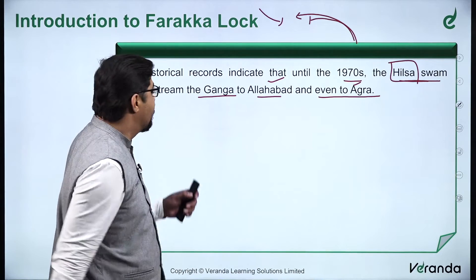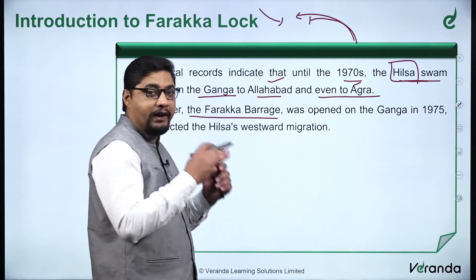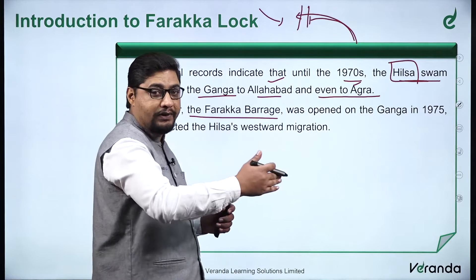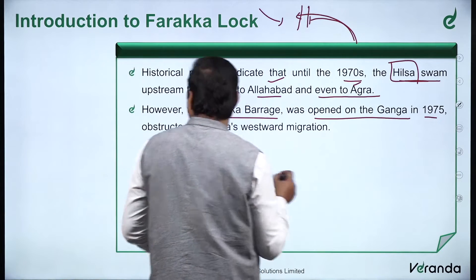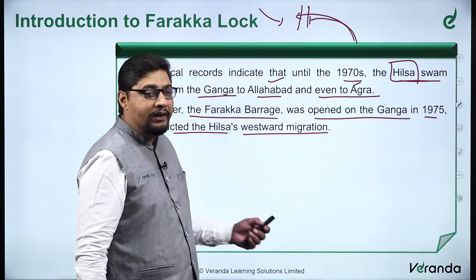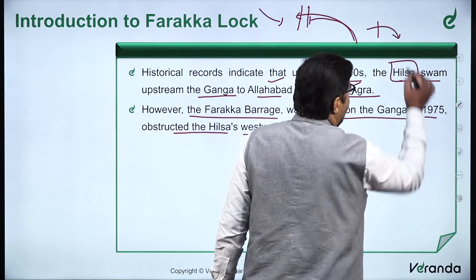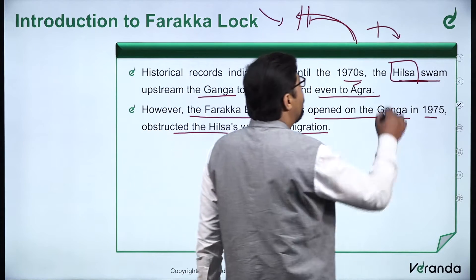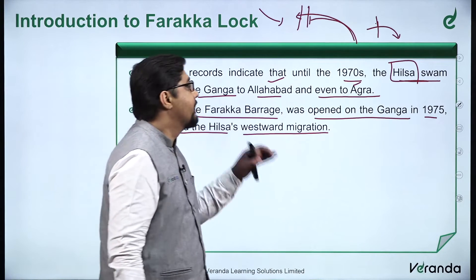So the Hilsa was travelling in a reverse direction. But then the Farakka Barrage — essentially a dam — was opened on the Ganga in 1975, and it obstructed the Hilsa's westward migration. Even if you construct a dam, fish cannot travel beyond it. Some fish may pass when water is released, but overall there is an obstruction to the flow of the fish.